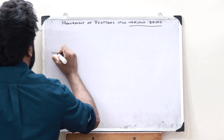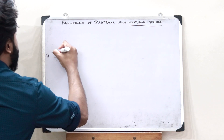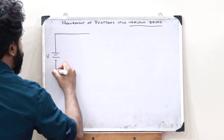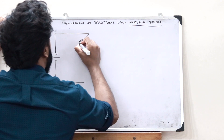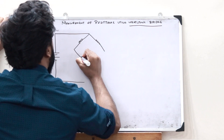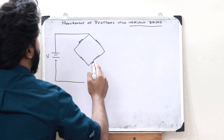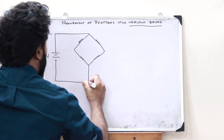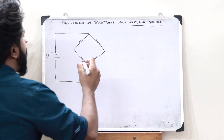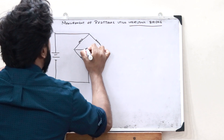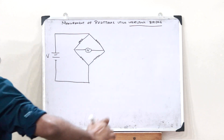Let us take a voltage source — let the voltage be V. Now let us connect this voltage to a particular bridge-like structure. This has got 4 resistances: R1, R2, R3, and R4, and then it is connected back over here. So this is what you refer to as a Wheatstone's bridge, and here we connect a galvanometer. This is the basic structure of a Wheatstone's bridge.